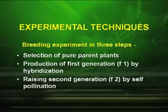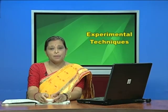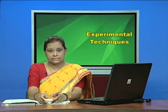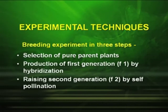Now, let us see what were the experimental techniques. Basically, he performed breeding experiments in three steps. The first step was the selection of pure breeding plants — whether they were pure for the tall plant or pure for the dwarf plant. After that, the production of the first generation by the process of hybridization — the two parents were cross-pollinated to produce the F1 generation. The third step was raising the second generation, which is called F2, by self-pollination.